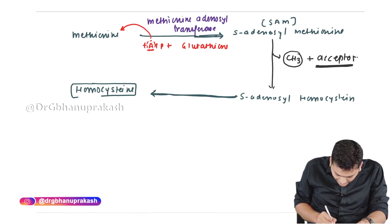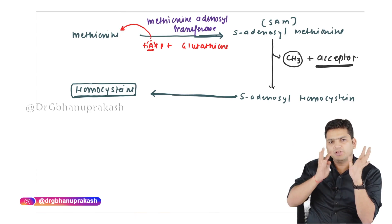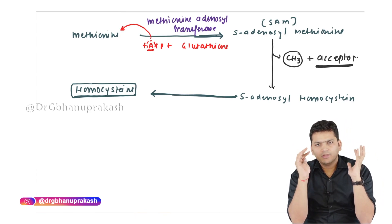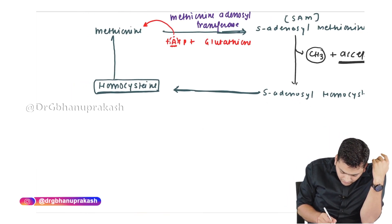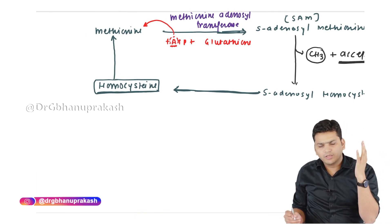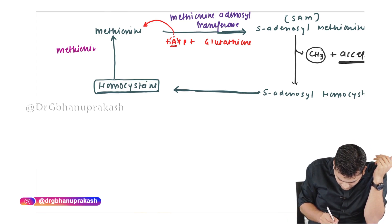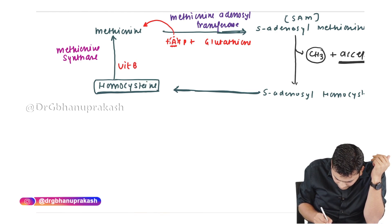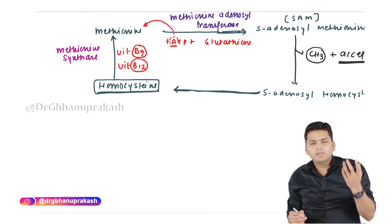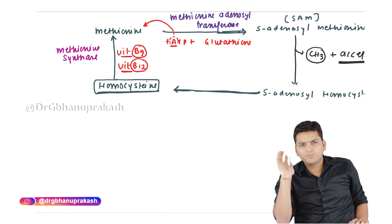S-adenosyl homocysteine converts back to homocysteine, and that is the critical point. Homocysteine has two choices: it can convert back into methionine, and the enzyme for that is methionine synthase. For the functioning of methionine synthase, we require vitamin B12 and vitamin B9. These are very critical for the exit from homocysteine towards the methionine side.